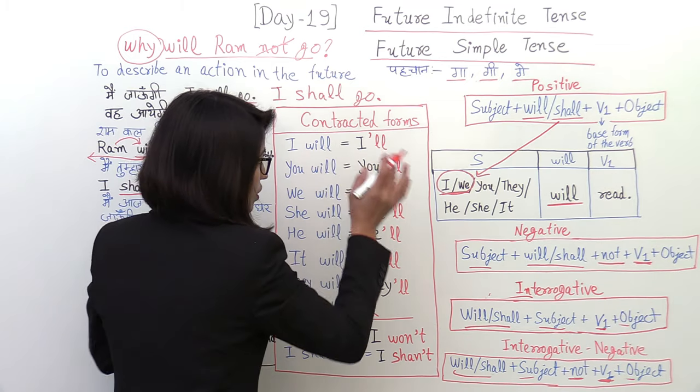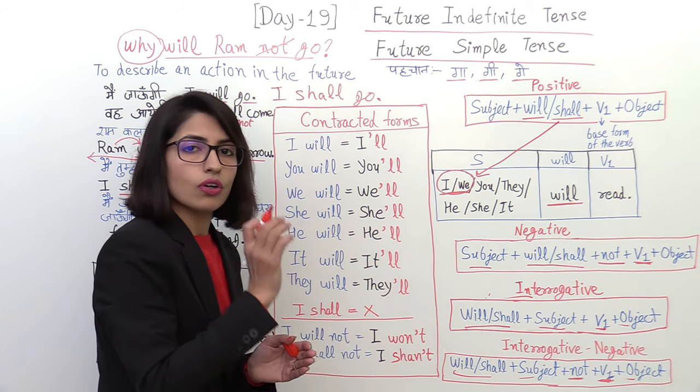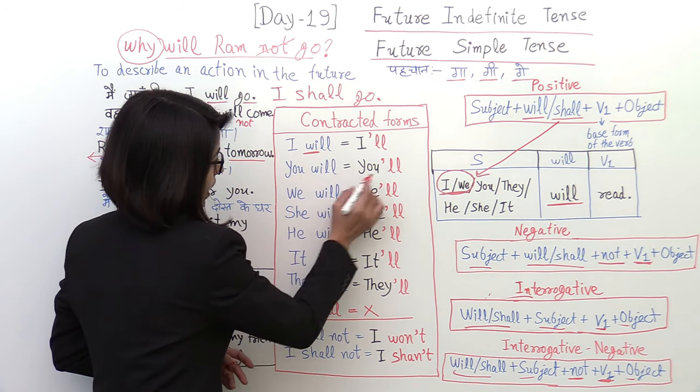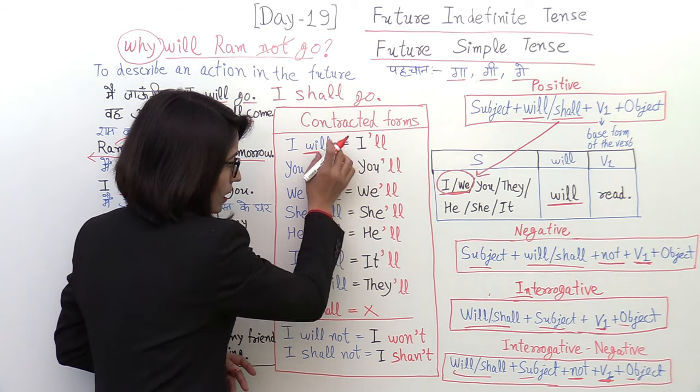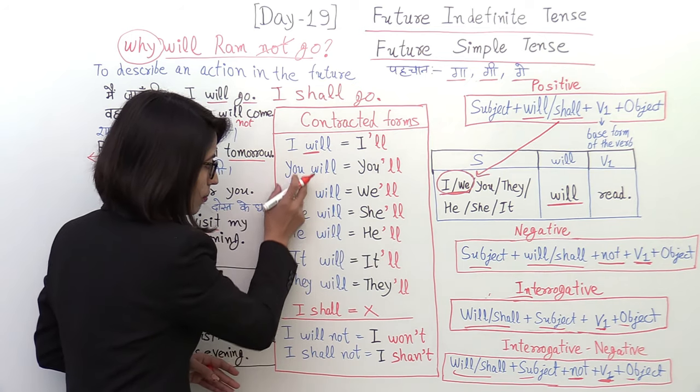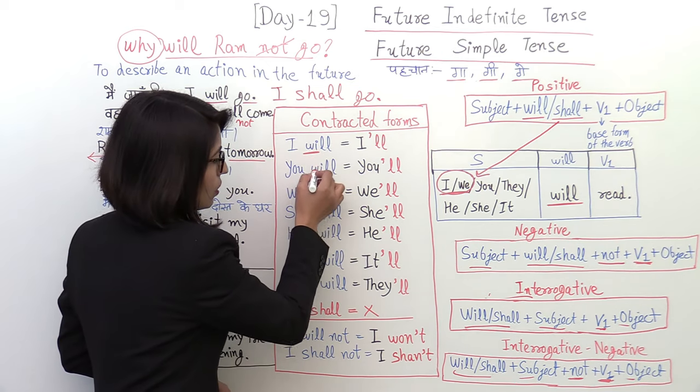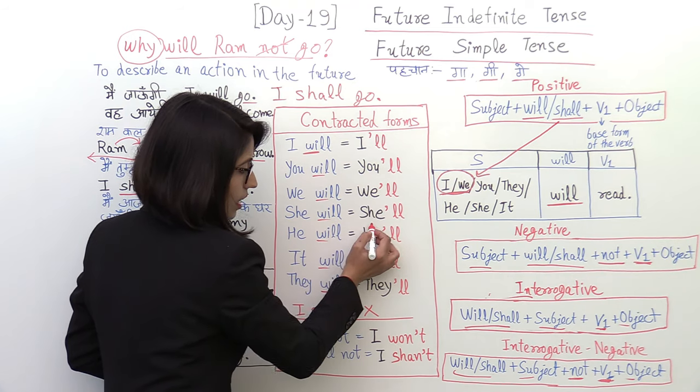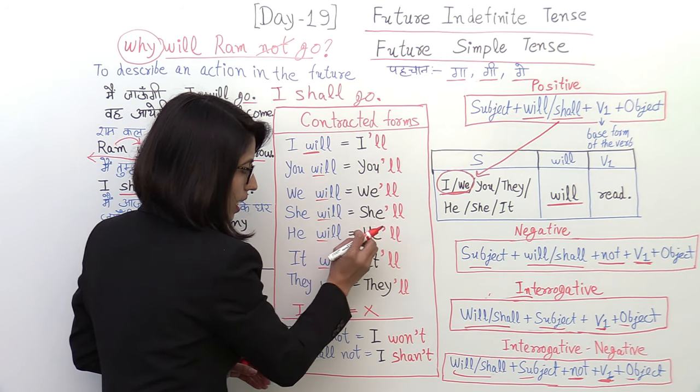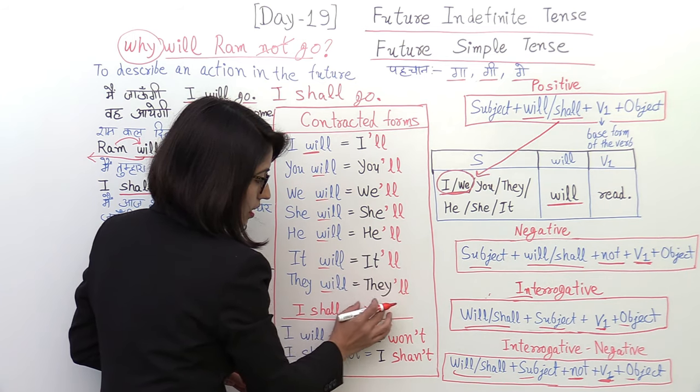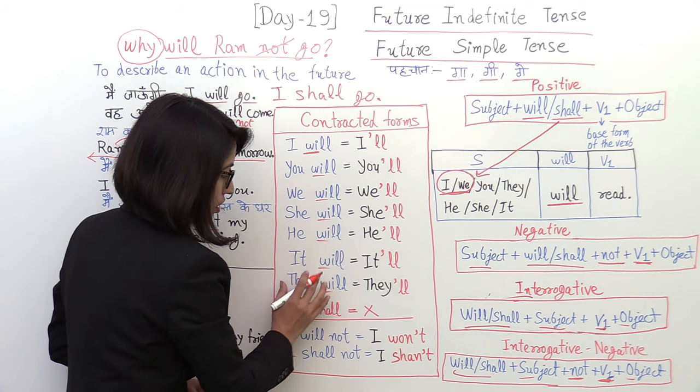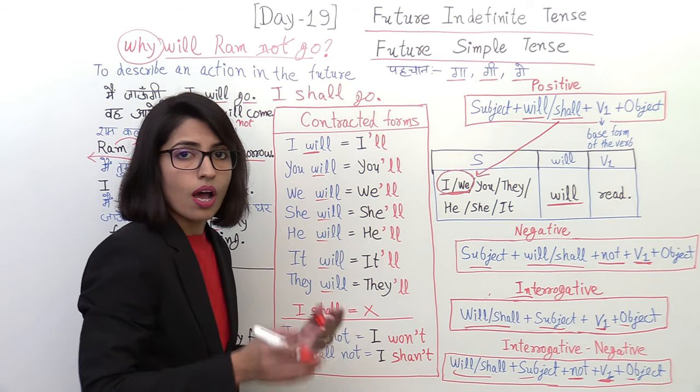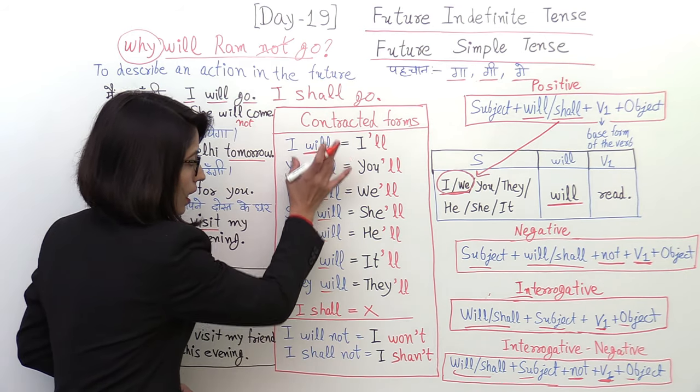Now let's go to contracted forms. The contractions, when we add two words and make one word, we use contractions. So here, which are the contractions that you will remember? I plus will, when you add them, the W and I will go, and after I, then double L. We pronounce it as I'll. You'll, we'll, she'll, he'll, it'll, they'll. This way. These are will contractions. There is no contraction for shall. If you want to say I shall, you won't shorten it. You will say it completely.